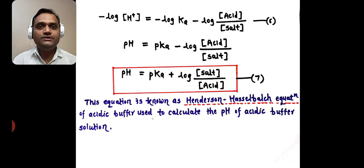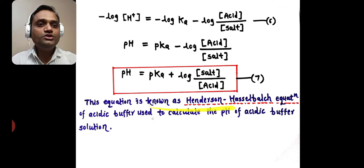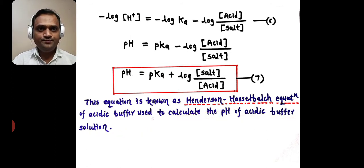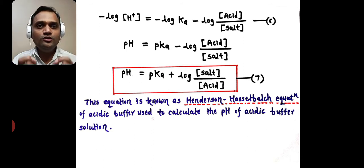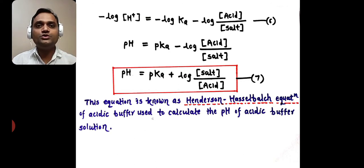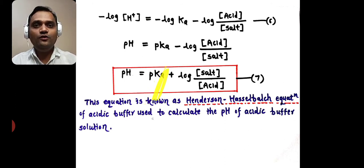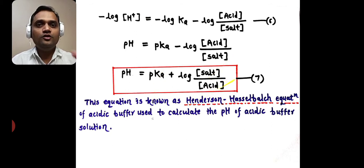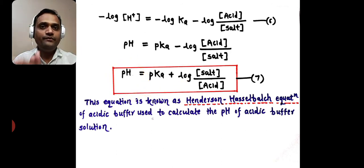So our final equation is: pH = pKa + log([salt] / [acid]). This equation is known as the Henderson-Hasselbalch equation of acidic buffer, used to calculate the pH of an acidic buffer solution. To use it, we need the value of pKa, the molar concentration of salt, and the molar concentration of acid.